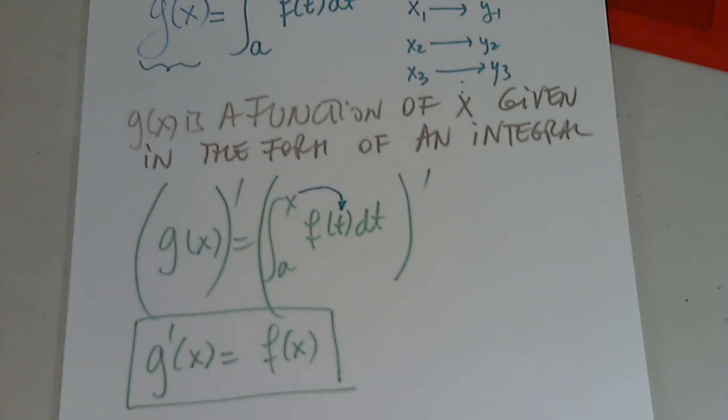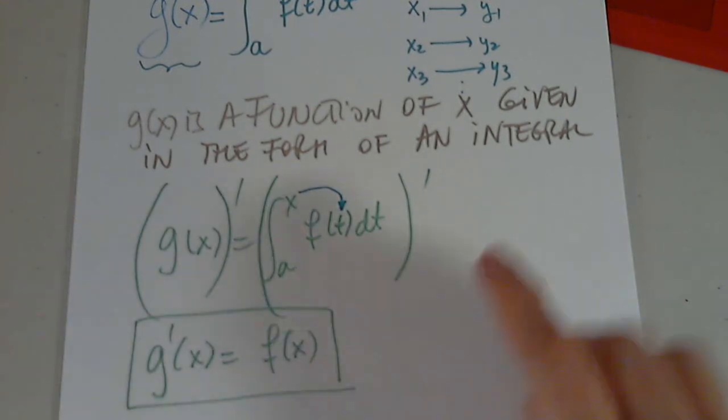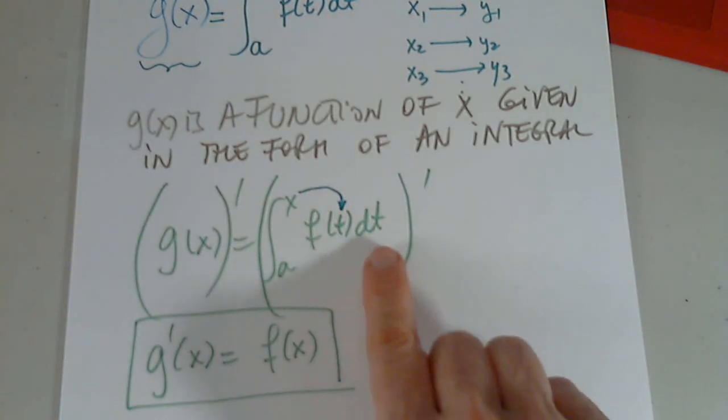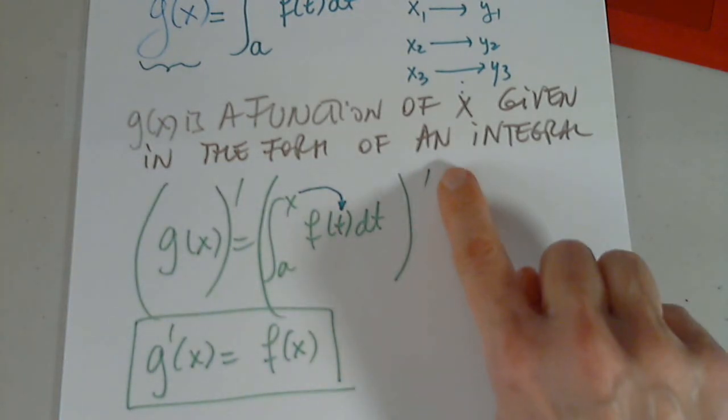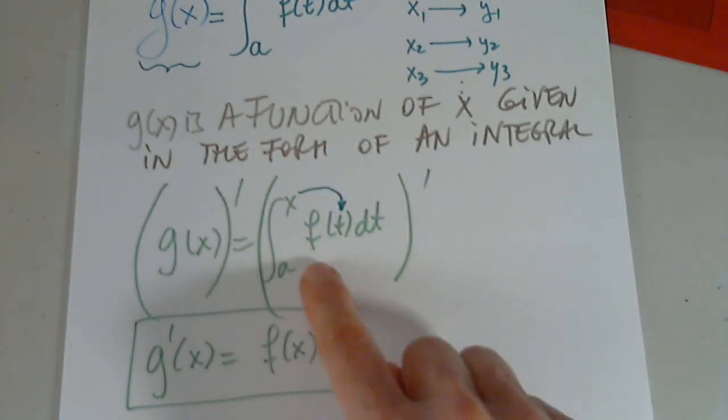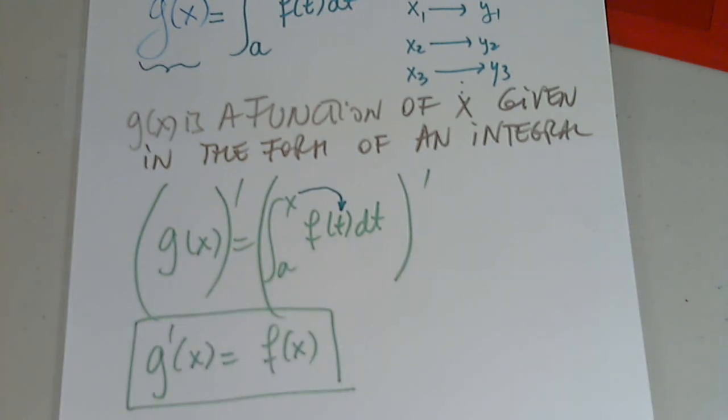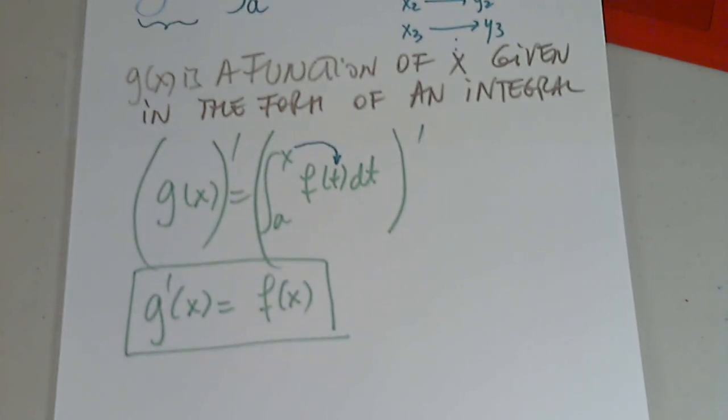So after you differentiate f t dt, that would then go to f of x. I'm differentiating not f t dt, I'm differentiating the integral from f of t dt. And so since you have x as the upper bound, then it will go back into the equation. Correct. Exactly. Gotcha. All right. Thank you. Very good.